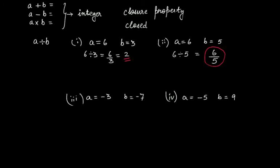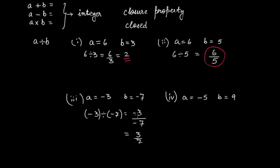For the third case, a divided by b is minus 3 divided by minus 7. Since you have two negative numbers, the outcome will be positive, giving you 3 by 7. But 3 is not fully divisible by 7, so the result is not an integer. Similarly, in the second case, 6 is not fully divisible by 5, so 6 by 5 is not an integer either.